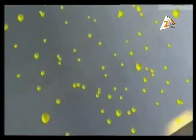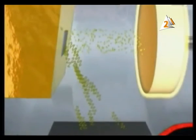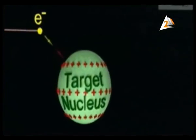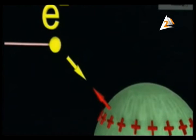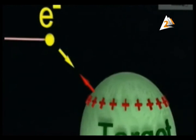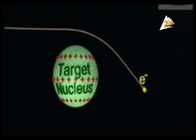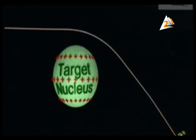Electrons are accelerated by a large potential difference and collide with a target made of tungsten or molybdenum embedded into the copper anode. The anode gets very hot and is therefore made of solid copper, because copper is a good conductor of heat, conducting heat to the cooling fins outside the tube. The anode must be cooled to prevent its damage.